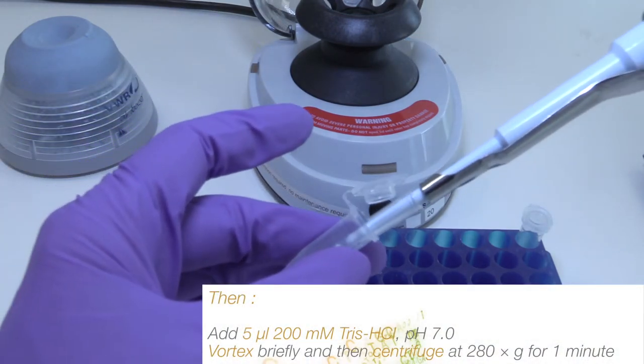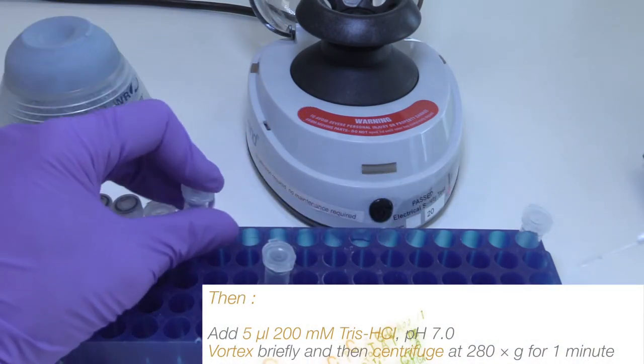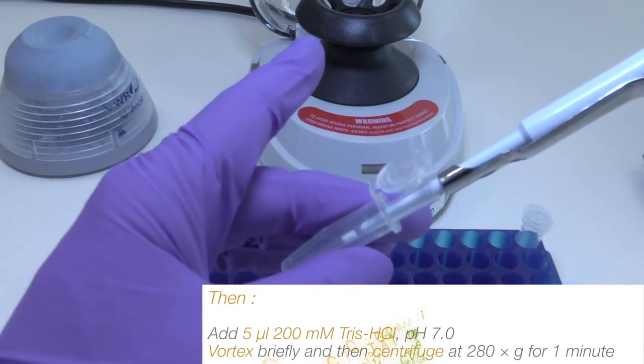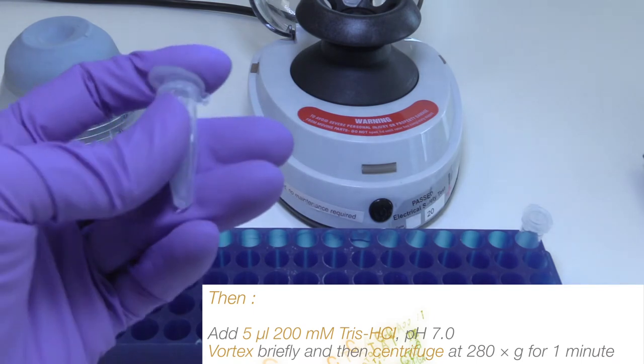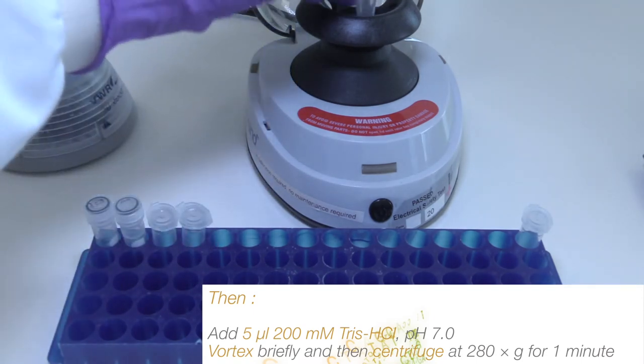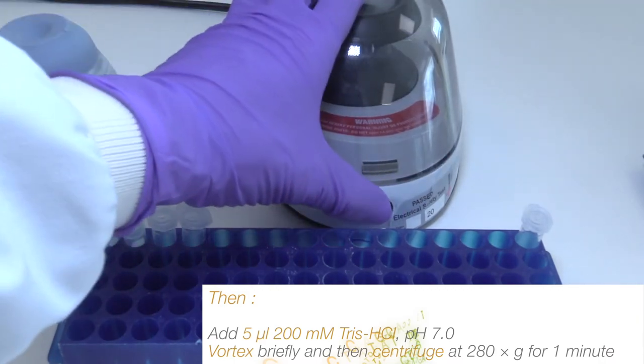Then add 5 microliters of 200 millimolar Tris HCl at a pH of 7. Vortex briefly once more and then centrifuge at 280 times G for one minute.